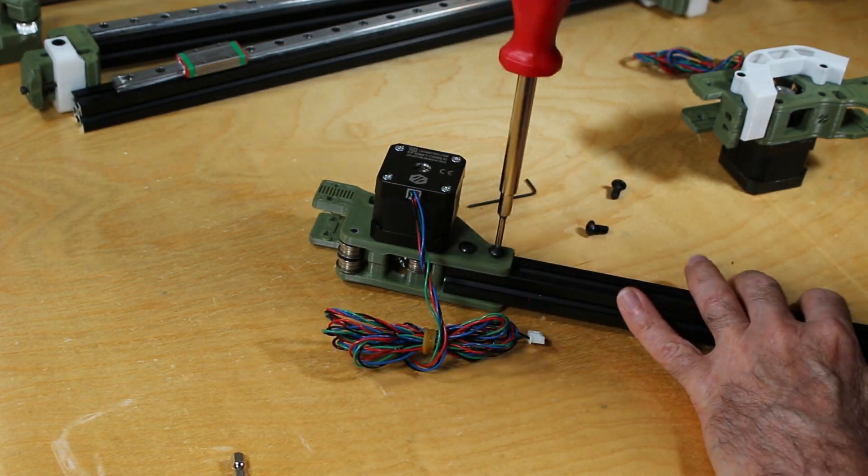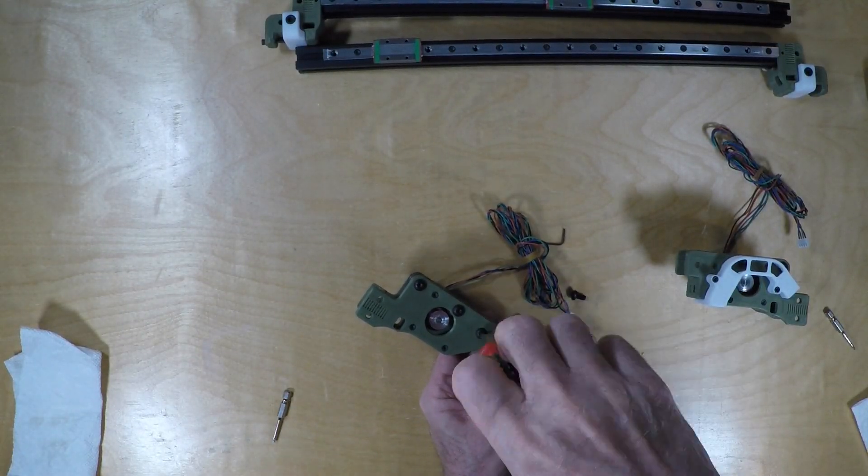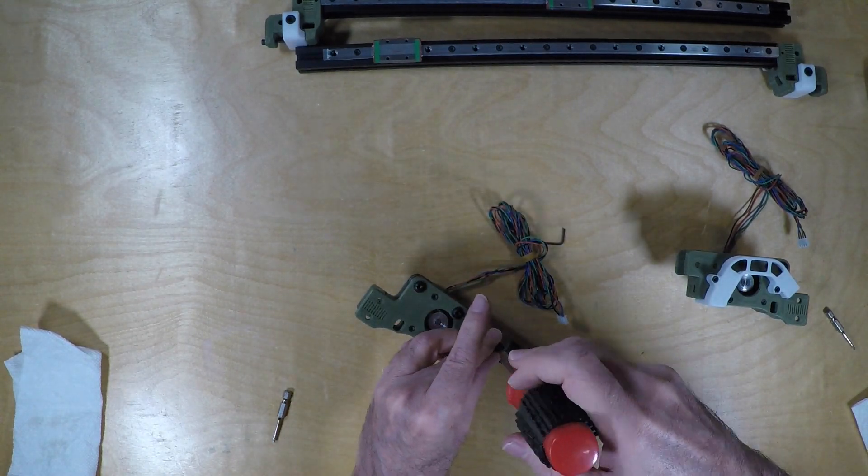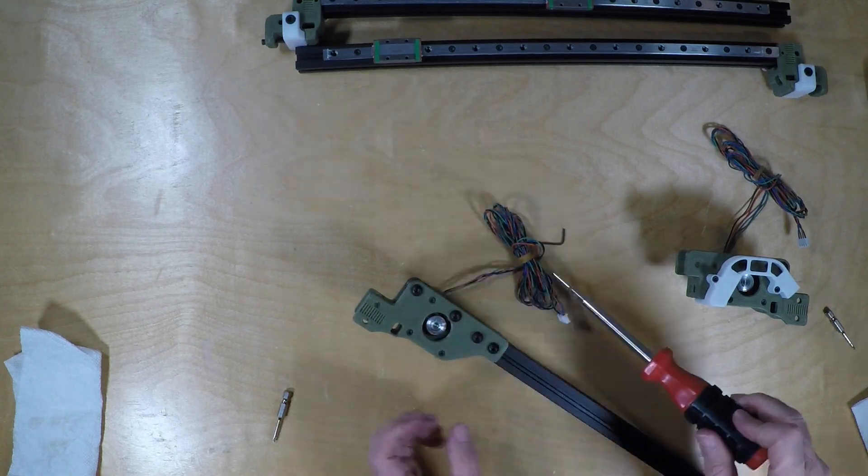Please note, I'm doing this in a slightly different order than the Voron manual states. The manual asks you to put these on the Y-rails first, but I chose to do it this way. It seemed to be a little easier for me to get it done this way.